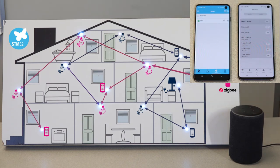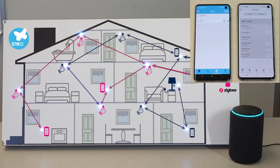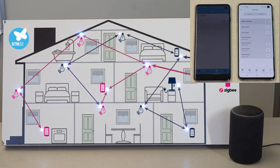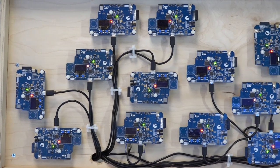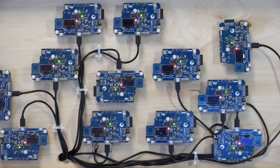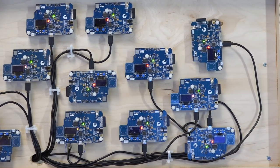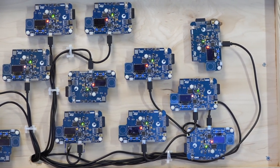Now with this bridge enabled as part of the network, I can use Alexa to control all the lights. Alexa, turn family room on. [Alexa]: Okay. Alexa, turn family room to 10%. [Alexa]: Okay. The boards used for the demo are the STM32WB Discovery Kits, part number STM32WB5MM-DK.